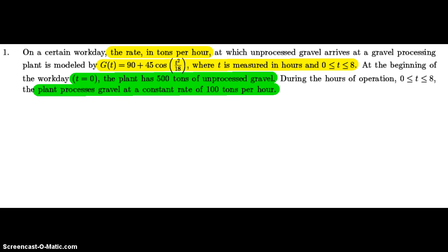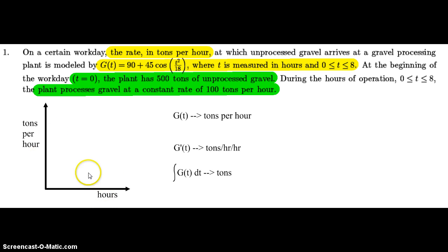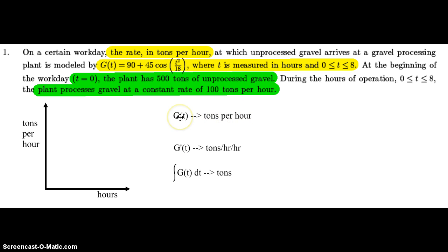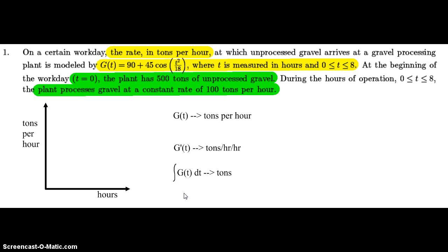The first thing we're going to do is analyze the units. g is measured in tons per hour and the horizontal axis time is measured in hours. If we want to know how many tons per hour of gravel is arriving, we read the graph off g of t. If we want tons per hour per hour, we take the derivative of g. And if we want the tons of unprocessed gravel, we perform the integral of g.